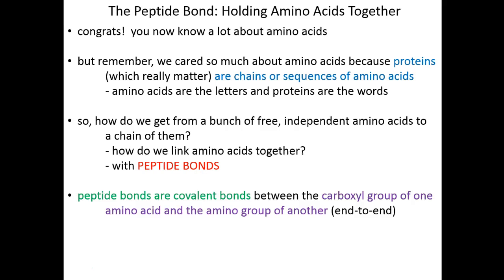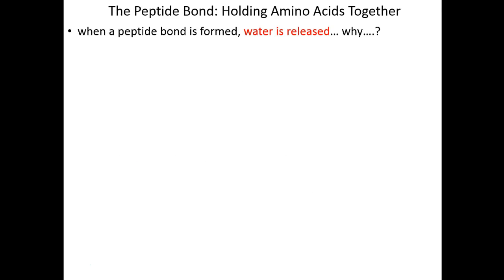The short answer is we do so with peptide bonds. Peptide bonds are fully covalent bonds—shared electrons between the carboxy group of one amino acid and the amino group of another. Amino acids are linked together this way, amino group to carboxy group, end to end, to make a chain.